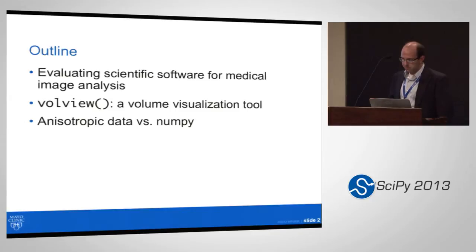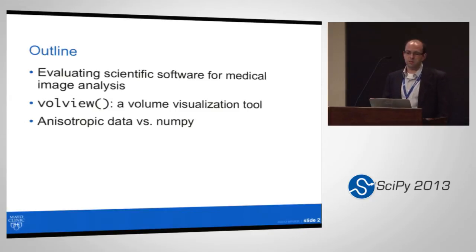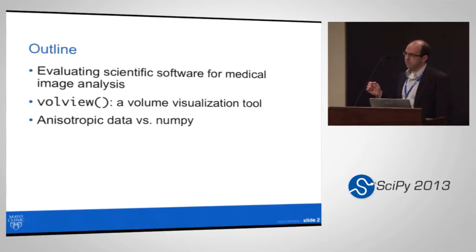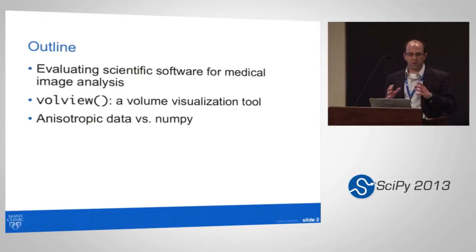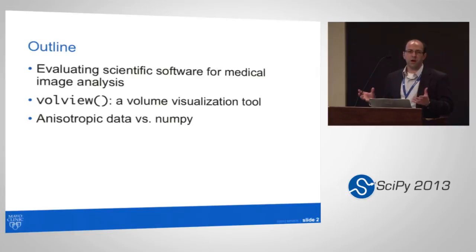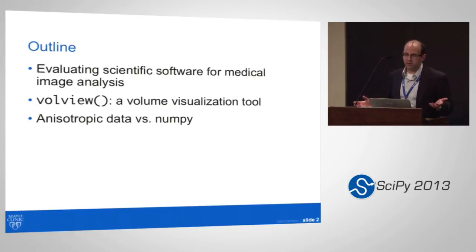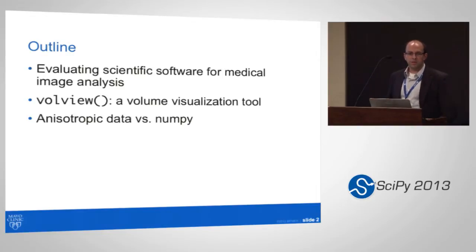And then a few comments about medical datasets, which are often acquired volumetrically, but the spacing in each spatial dimension is not equal to the spacing in each other. If everything is equal, it's like a Rubik's cube — a cubic or isotropic dataset. When they're not, it's an anisotropic dataset, which means different assumptions have to be made if you want correct quantitative metrics and analysis.